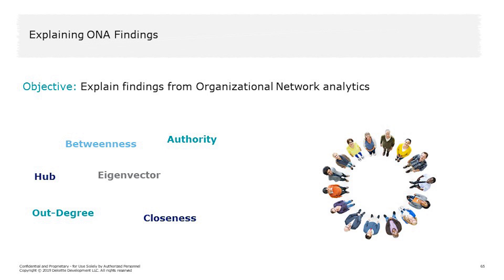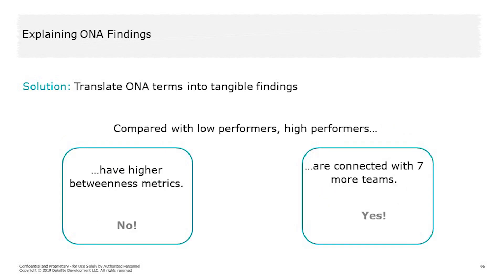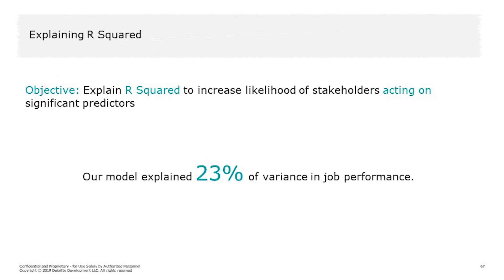At Deloitte we are also experimenting in the hot area of organizational network analytics. But how do you explain your findings given that the usual methodologies rely on quite complicated network configurations? Our learning: do not use common ONA terms — it just confuses your audience. Instead, don't say 'hyper performers have higher betweenness metrics.' Instead, use more tangible language to communicate your findings, such as 'higher performers are connected with several teams.'